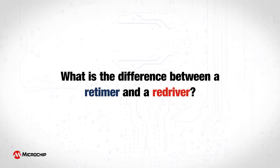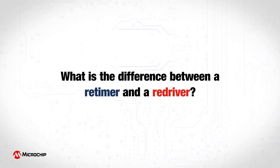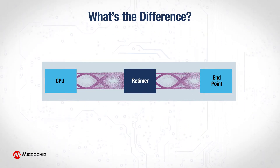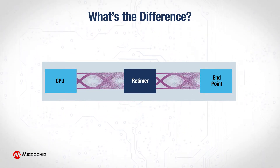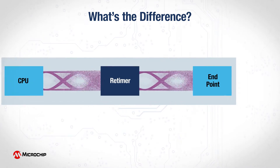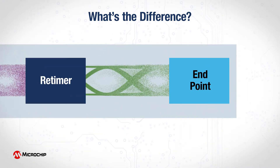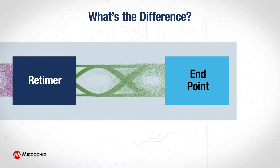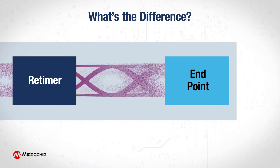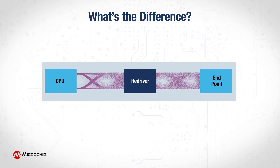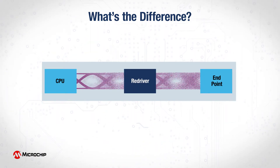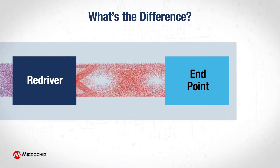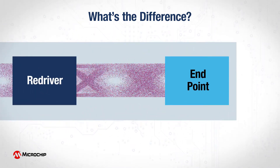What is the difference between a re-timer and a re-driver? Re-timers are mixed-signal analog-digital devices that are protocol-aware and have the ability to fully recover data, extract the embedded clock, and re-transmit a fresh copy of the data using a clean clock. A re-driver, also known as a repeater IC, regenerates signals to boost the signal quality of high-speed interfaces.